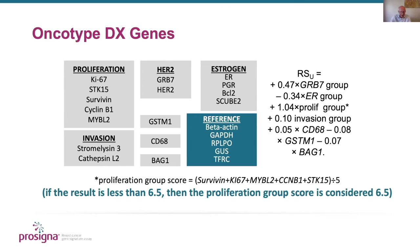One important feature that few people seem to appreciate is that this proliferation group is thresholded. If the proliferation score is less than 6.5, then it is considered as 6.5. In the TRANSATAC group, only 20% of patients had a proliferation score greater than 6.5, meaning that in 80% of cases, proliferation was in fact uninformative.